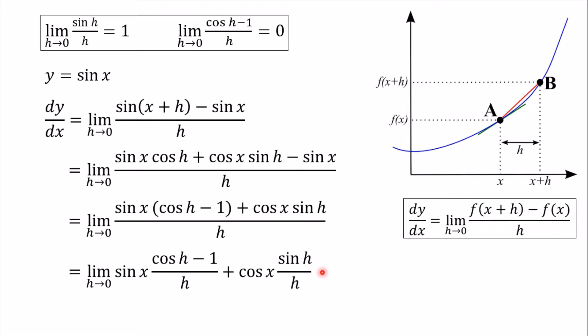And now at this point, we can actually use what we've got at the top. We're limiting h to zero, same as we did up here. And we know that when that's the case, cos h minus one all over h is equal to zero. So this bit here is equal to zero. And that means that this whole term is equal to zero. So this bit is just going to completely disappear.